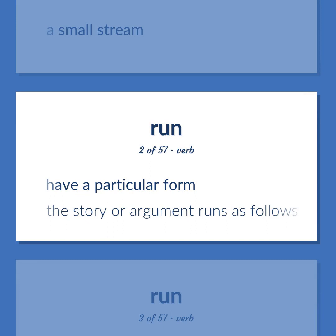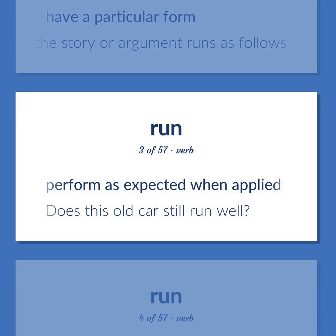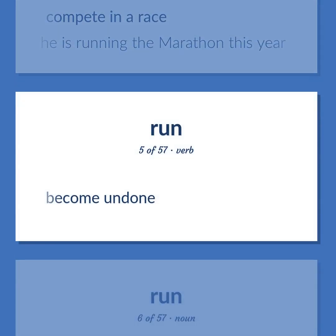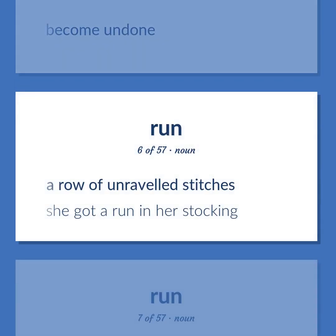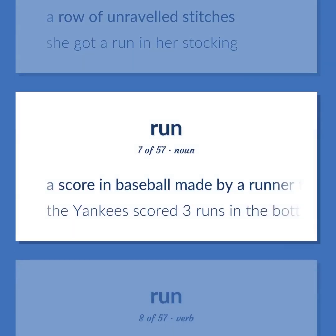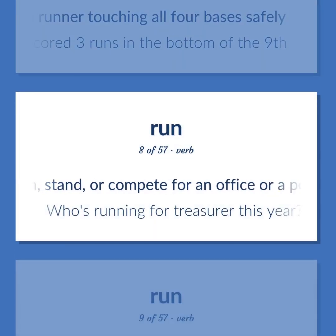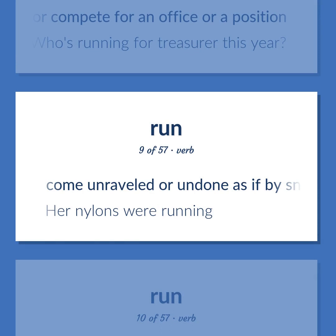Have a particular form. The story or argument runs as follows. Perform as expected when applied. Does this old car still run well? Compete in a race. He is running the marathon this year. Become undone. A row of unraveled stitches. She got a run in her stocking. A score in baseball made by a runner touching all four bases safely. The Yankees scored three runs in the bottom of the ninth. Run, stand, or compete for an office or a position. Who's running for treasurer this year? Come unraveled or undone as if by snagging. Her nylons were running.